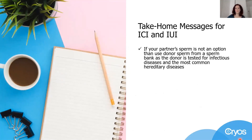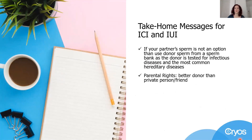My further take-home messages for artificial insemination: if you cannot use your partner's sperm due to severe male sperm deficiencies, then you can use donor sperm from a sperm bank. This is a good option as the donor is tested for infectious diseases and the most common hereditary diseases. In terms of parental rights, it is also a better choice to use an official donor rather than a private person or a friend.